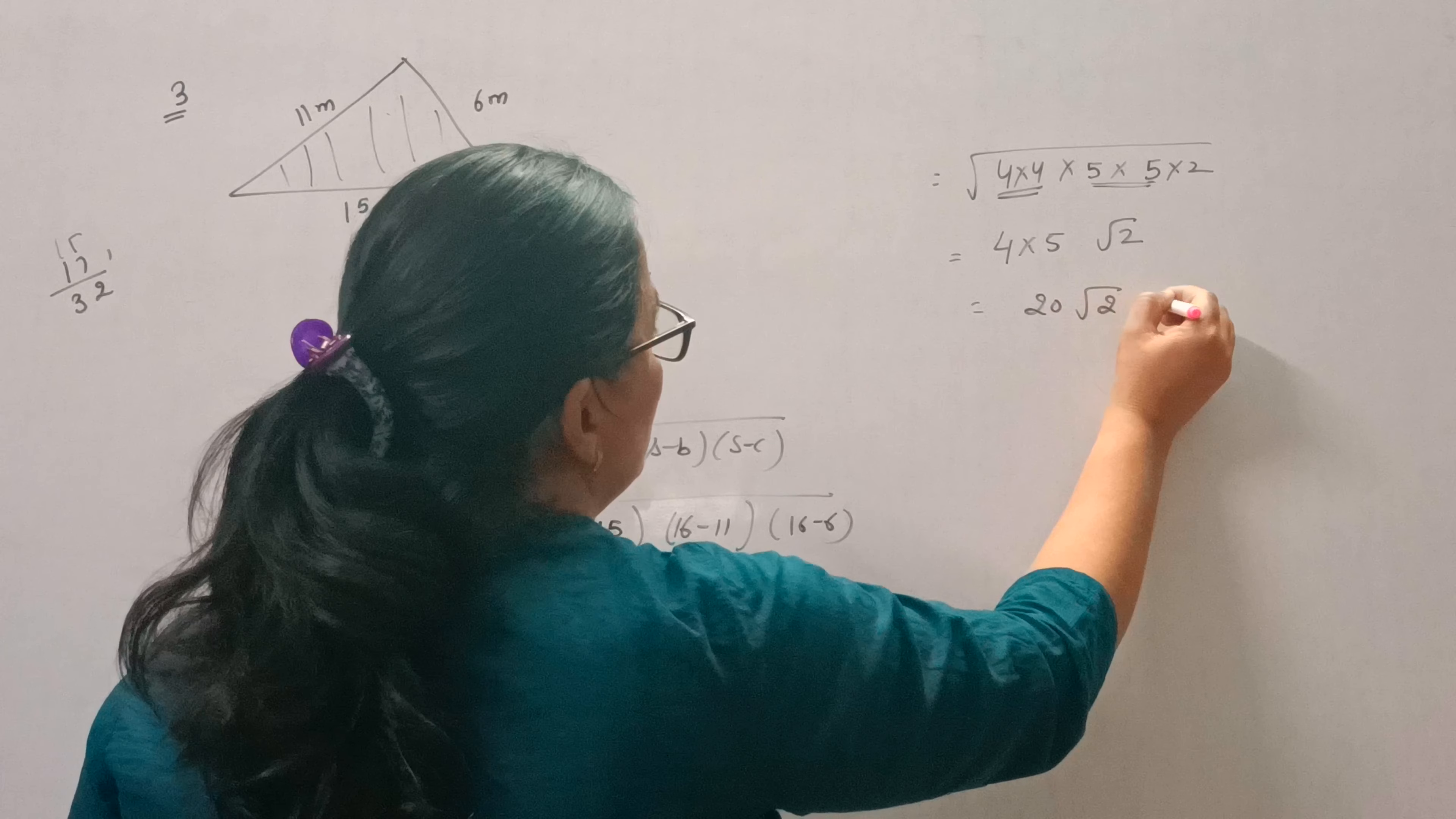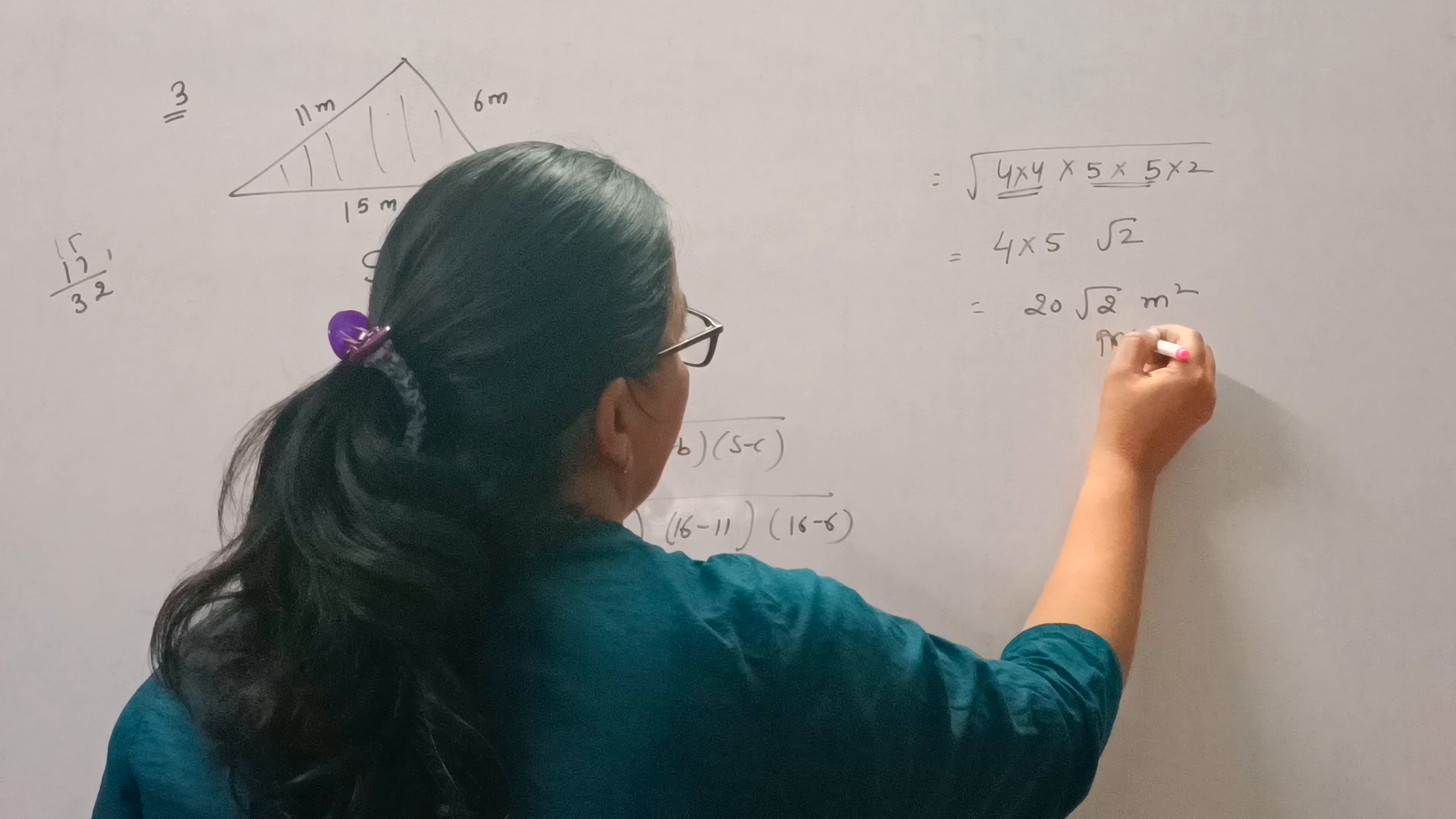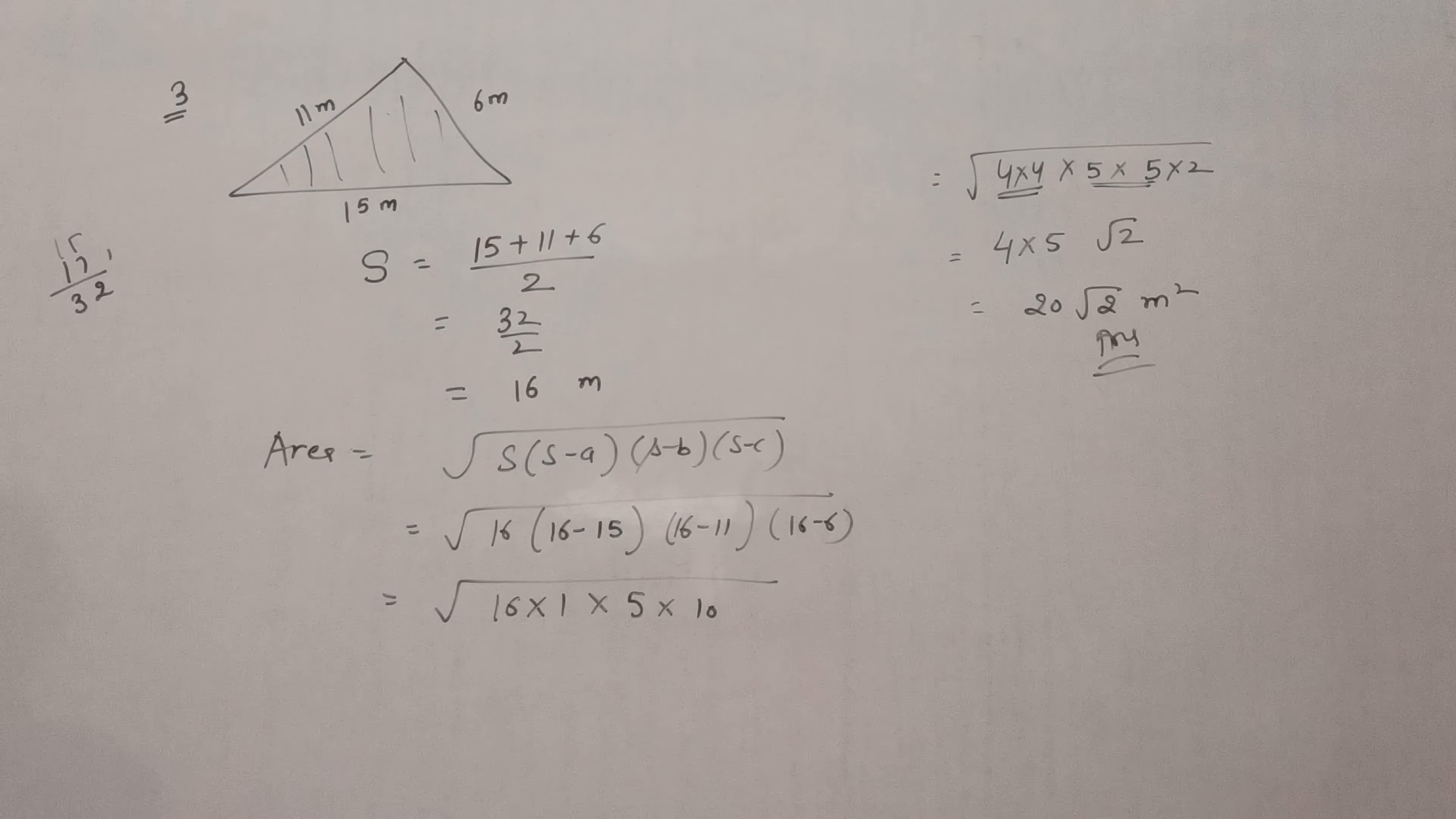20 root 2 meter square is the area. So this is the question number 3 of exercise 12.1. I hope you all have understood. Thank you for watching. Have a nice day.